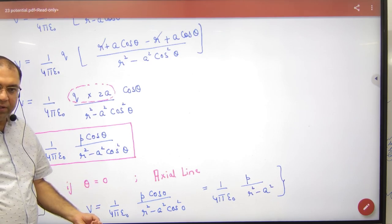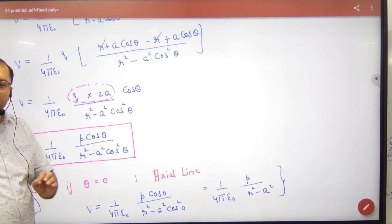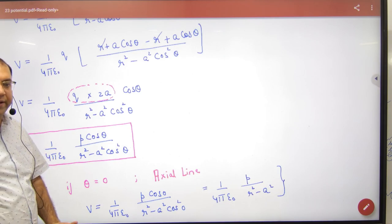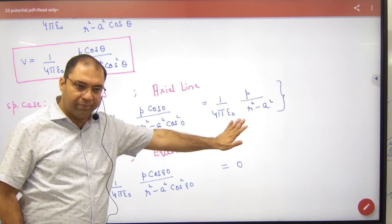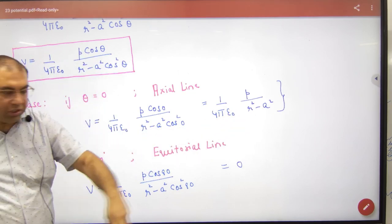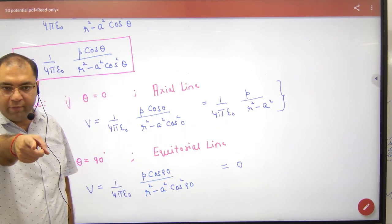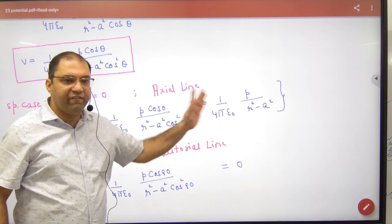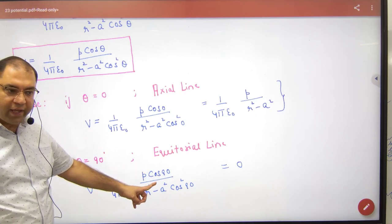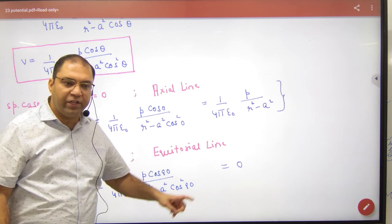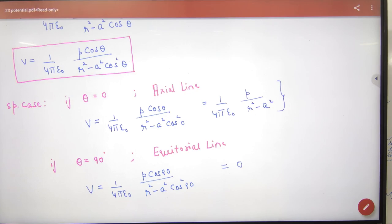Using this formula, for any dipole at any point, V can be found. For the axial line, θ = 0, cos 0 = 1, so the axial formula follows directly — note it in your formula booklet. For the equatorial line, θ = 90°, cos 90° = 0, so V = 0 on the equatorial line. This can appear as an objective question. Note all three formulas — they are important.